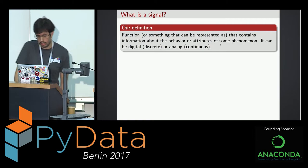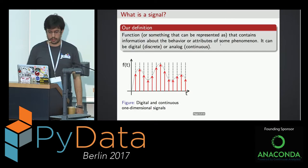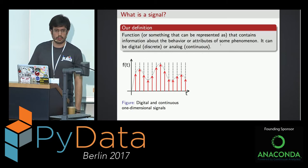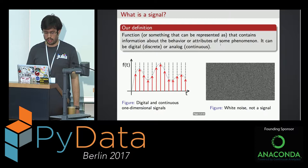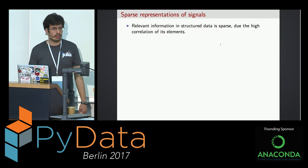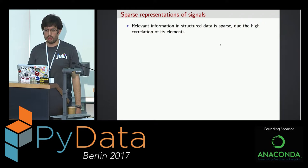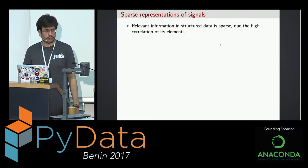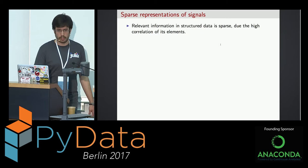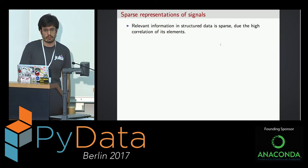A signal can be digital — that is, discrete — or analog, that is continuous. For example, this is a digital signal, and discrete samples of the signal will form a discrete or digital signal. Here is white noise — it's not a signal. Signal carries information, and relevant information in structured data is sparse. The problem is we need to know what is the good representation system to have a sparse representation of our signal.